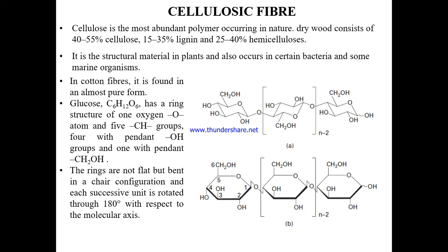In cotton fiber, cellulose is found in almost pure form because the percentages of lignin and hemicellulose are very low. Glucose, with chemical formula C6H12O6, has a ring structure of one oxygen atom and five CH groups — four with pendant hydroxyl groups and one with a pendant CH2OH group. This is the chemical structure of glucose.